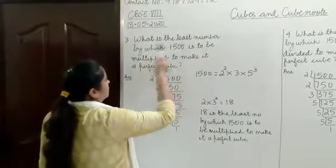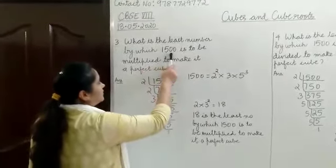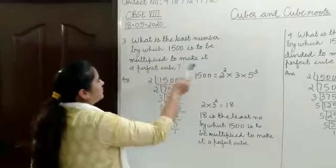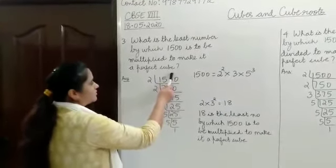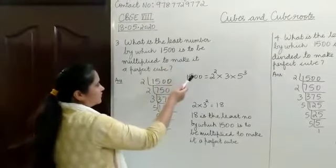What is the least number by which 1500 is to be multiplied to make it a perfect cube? This means 1500 is not a perfect cube.